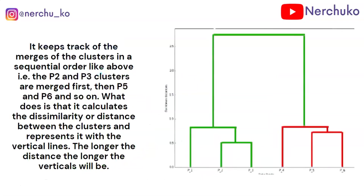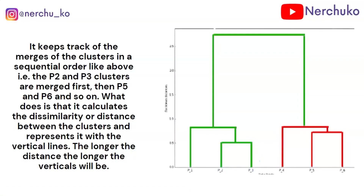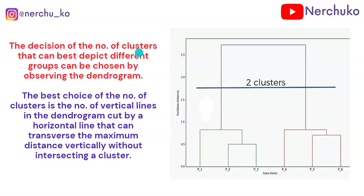We join clusters based on similarity by calculating the distance. After computing distances we can merge clusters, producing the dendrogram. The optimal number of clusters is chosen by observing the dendrogram — draw a horizontal line at the position of maximum vertical distance without intersecting any cluster merges.